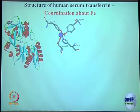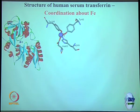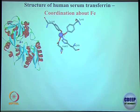For example, over here tyrosine — tyrosine is nothing but a phenol-containing amino acid. Tyrosine oxygen can bind with the iron center; another tyrosine oxygen, the phenol oxygen, can also bind with the iron center. This is histidine and this is aspartate. Aspartate has a carboxylic acid group (CO₂H) that can bind with the iron center.